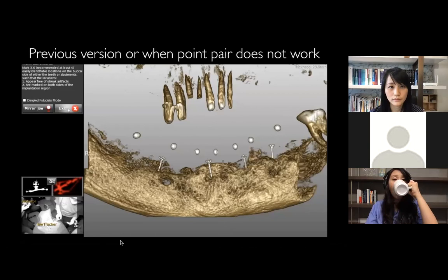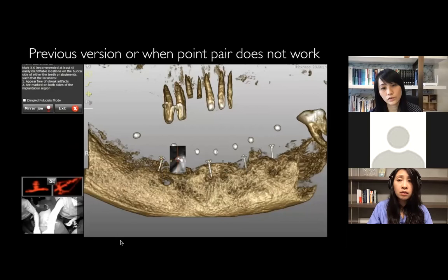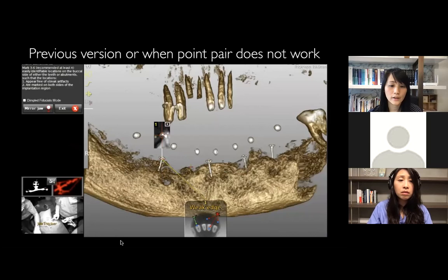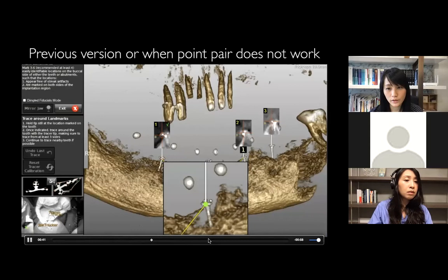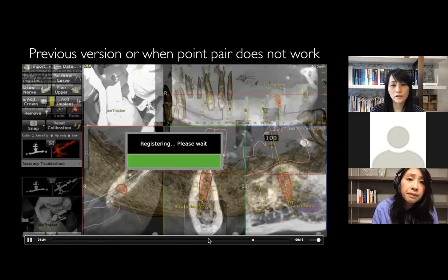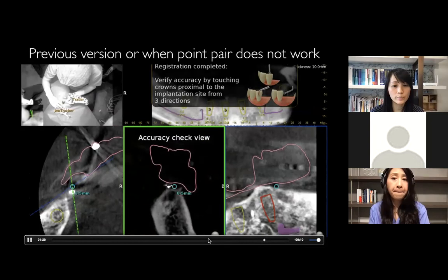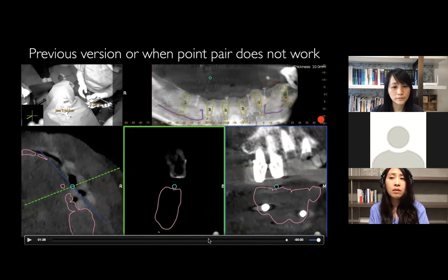After the registration procedure, you always do the accuracy check. This is the beauty of using compatible bone screws — the registration procedure becomes very easy to execute. In the previous version, or when point pair doesn't work, you use the bone screw as a stable tooth and trace on it from one, two, three up to a hundred until done — one after one. So you can see the difference: the trace method takes much longer compared to before this version launched. Either way works; one is more time-saving, the other is more time-consuming.